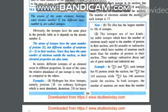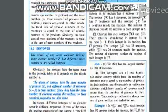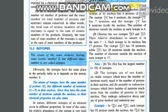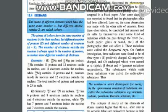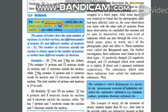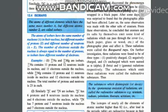You have to remember the examples — they can be asked for the 2024 examination, and it was asked. Then we have isobars. Isobars are atoms of different elements which have the same mass number but different atomic number. So same A, different Z — these are called isobars.